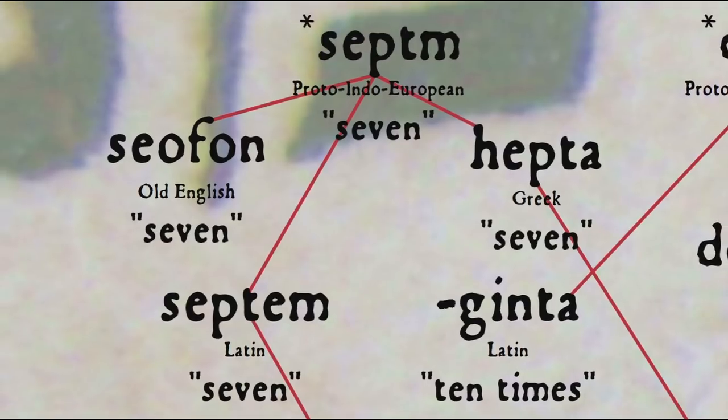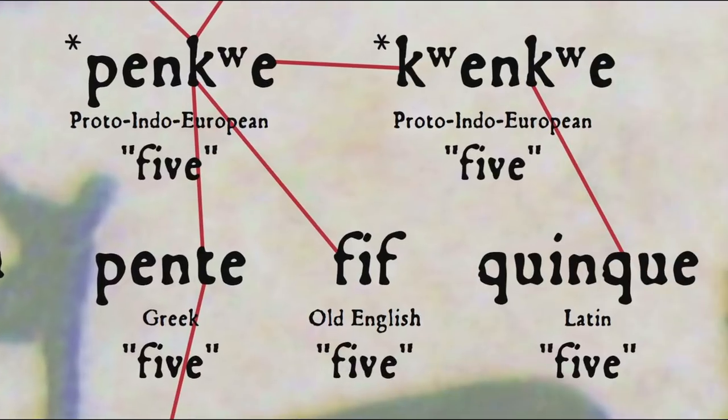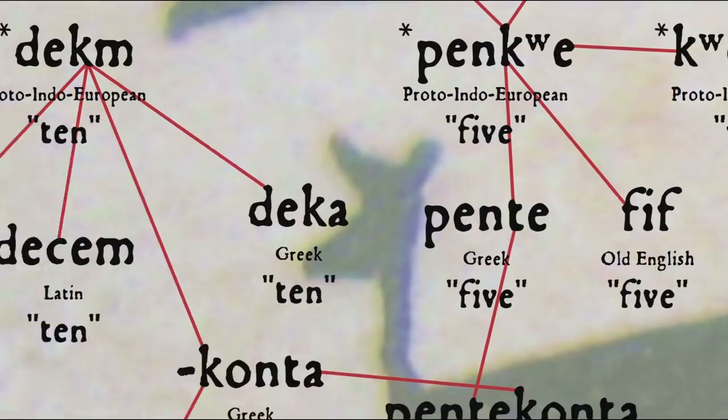The root *septm becomes septem in Latin, seofon in Old English — with P typically becoming F in Germanic languages according to Grimm's Law — and hepta in Greek, as S typically becomes H in Greek except when at the end of a word or next to a stop consonant. Proto-Indo-European *penkwe, 'five,' becomes Old English fif, with that P becoming F again; pente in Greek; and through the assimilated form quinqua, becomes Latin quinqua. The sense of 'ten' in Pentecost and Septuagint comes from the root *decm, 'ten.'